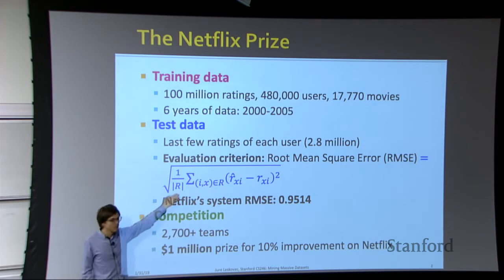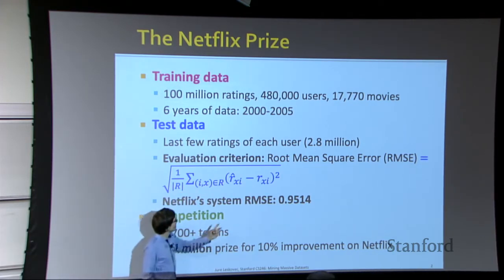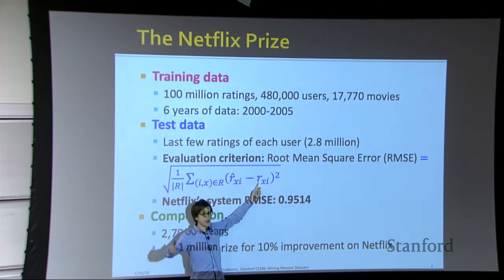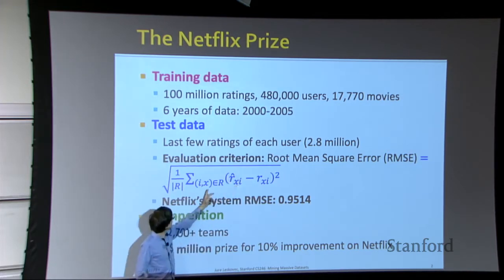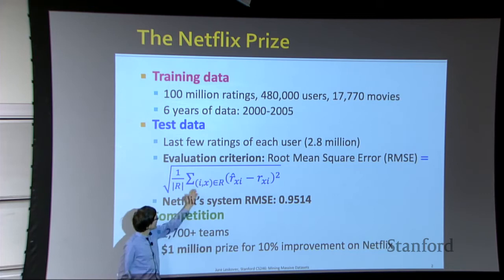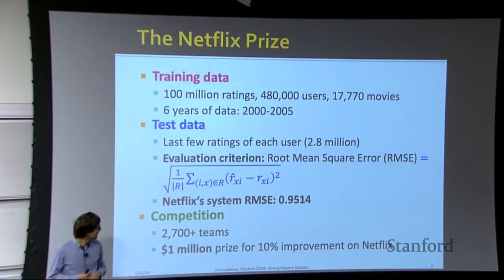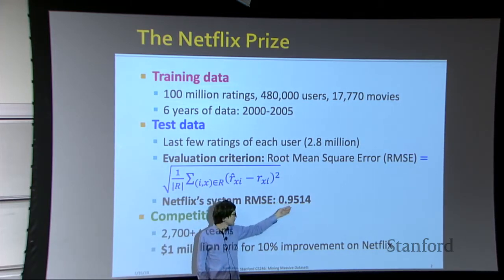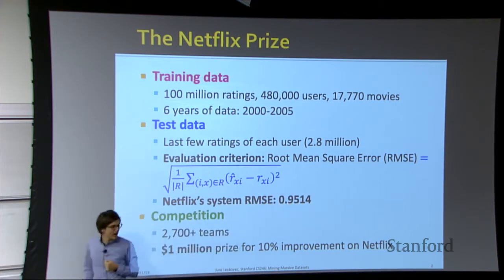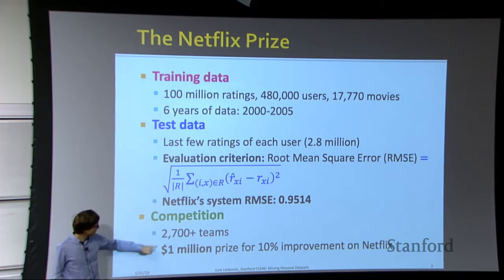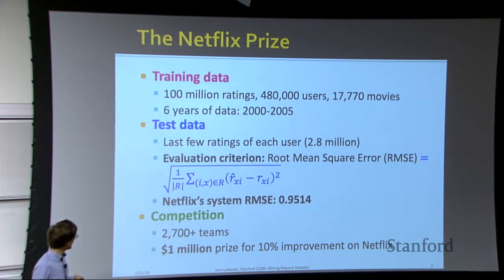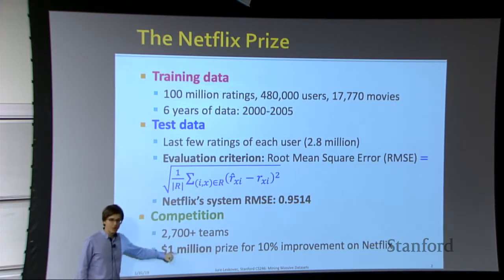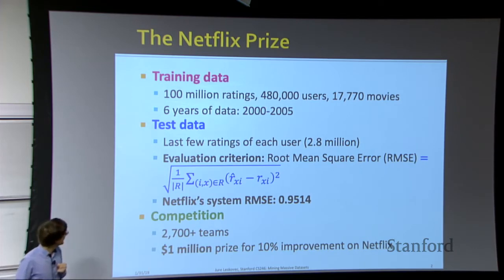The evaluation criteria was to minimize the sum of squared errors — specifically the root mean square error between predicted rating and ground truth rating for user X on movie I over all ratings in the test set. At that point, Netflix had a system in production with RMSE of 0.95. They organized the competition, with more than 2,700 different teams participating. Whoever could improve this number by 10% would score a million dollars. So what we'll go through today is what these 2,700 teams were doing, how they solved this problem, and who won a million dollars.